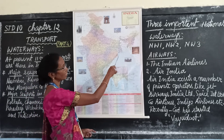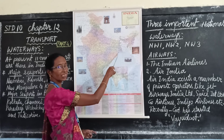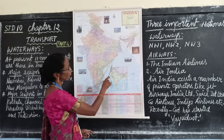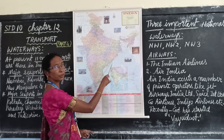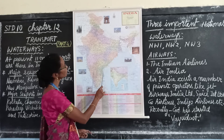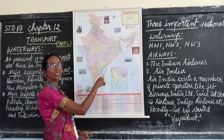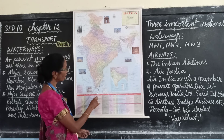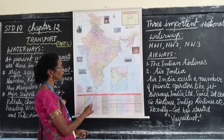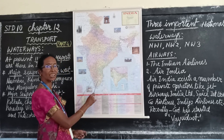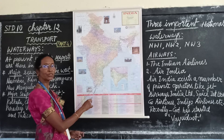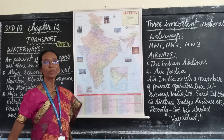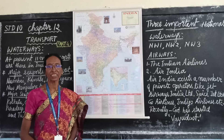On the east coast, Kolkata and its extension Haldia are in West Bengal, Paradip is in Odisha, Visakhapatnam is in Andhra Pradesh, and Chennai and Tuticorin are in Tamil Nadu. These are some of the important major seaports of India.